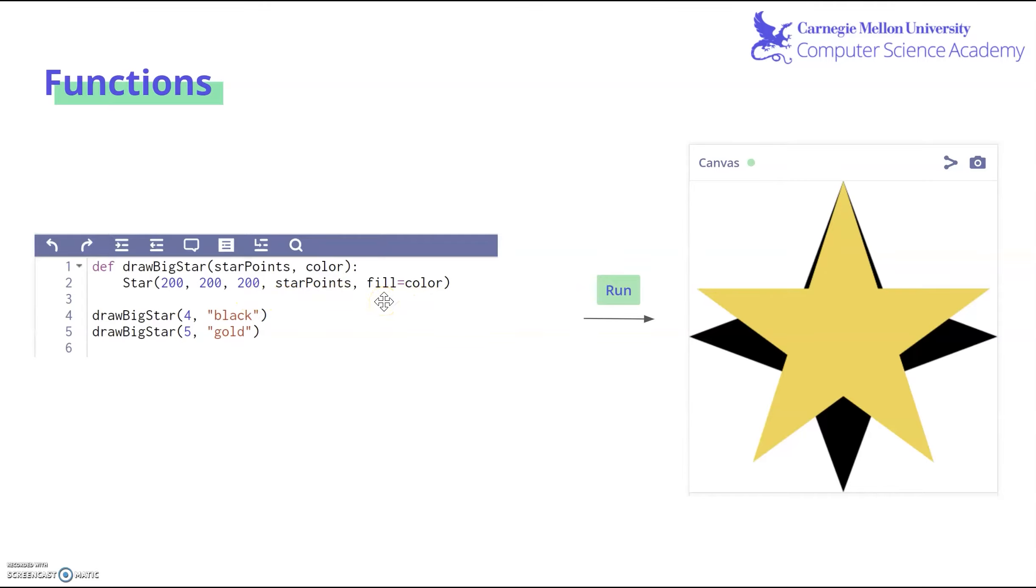Now functions on their own don't do anything until you actually call them. So here are two calls. Draw big star with four points and the color black. So here it is in the background of the canvas. And here's our second call for a five pointed star that is gold. Here it is again on the canvas.